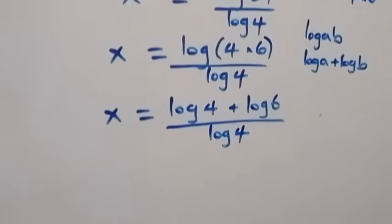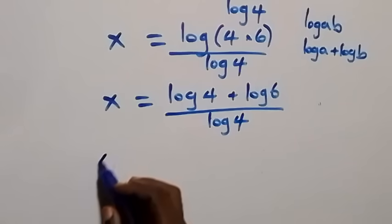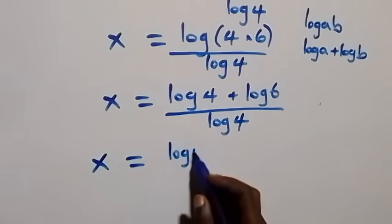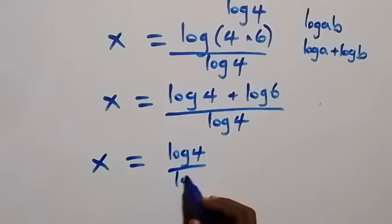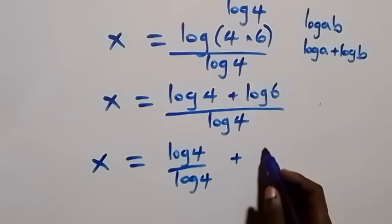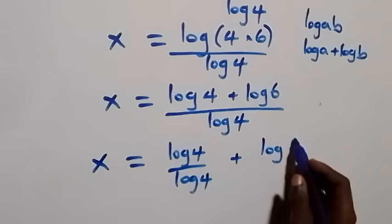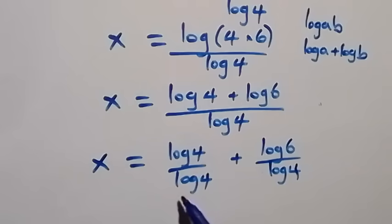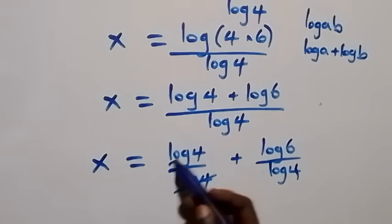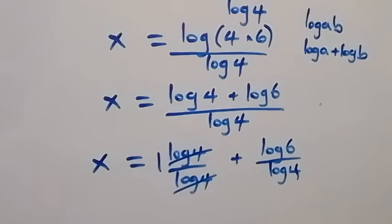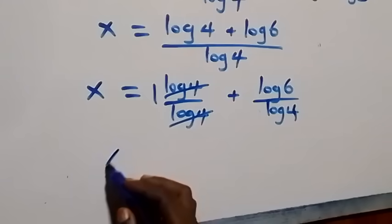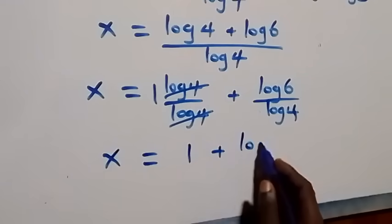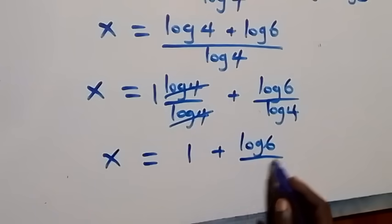This becomes x equals log 4 plus log 6, over log 4. We separate this fraction into two fractions: x equals log 4 over log 4 plus log 6 over log 4. Since log 4 over log 4 equals 1, we have x equals 1 plus log 6 over log 4.